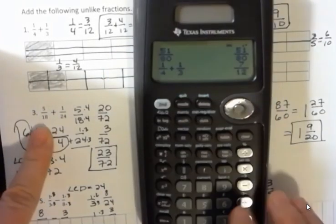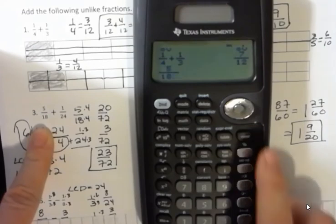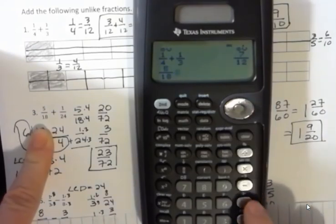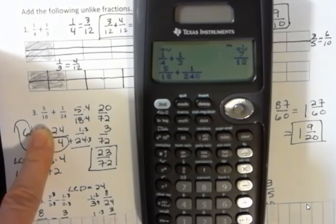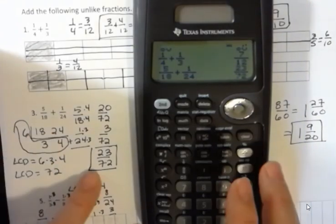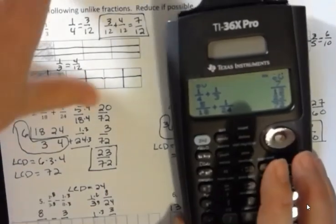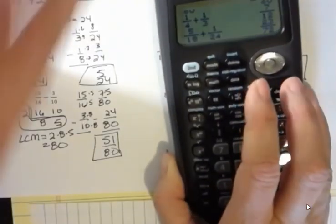What about this one? Five-eighteenths, arrow out, plus one-twenty-fourth. I can just hit enter, or I can arrow out of it first. It's going to tell me 23 over 72. Yeah, that's what I got. And I can do the same thing with subtraction.